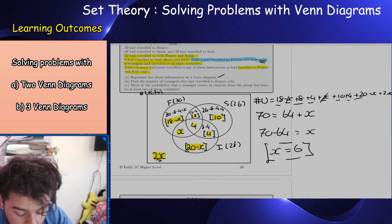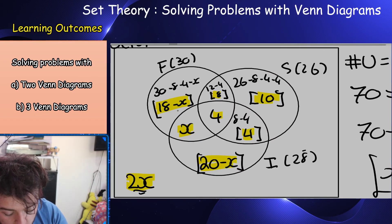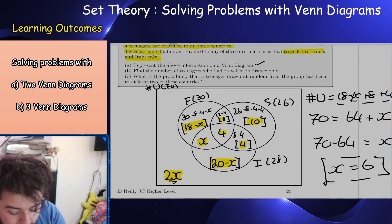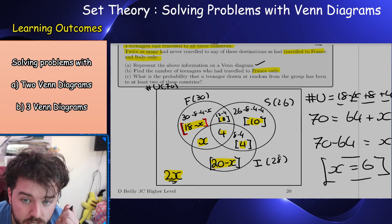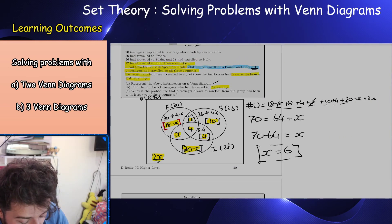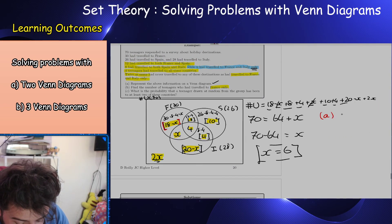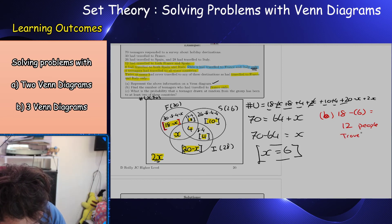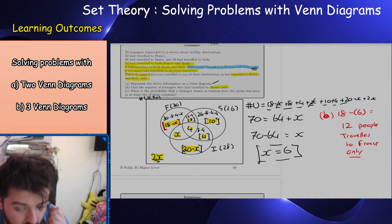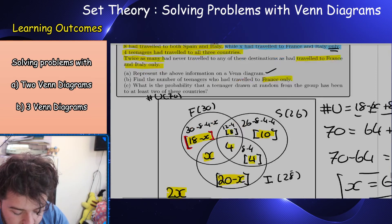So x equals 6. Part b asks for the number of teenagers who traveled to France only. That region is 18 minus x, so the answer is 18 minus 6, which is 12. 12 people traveled to France only.